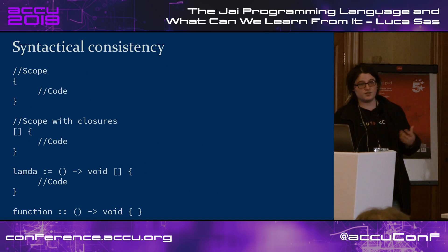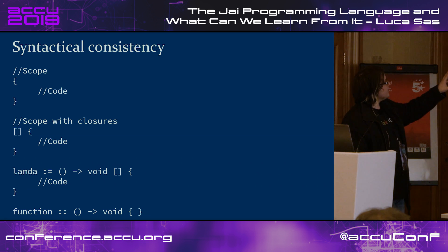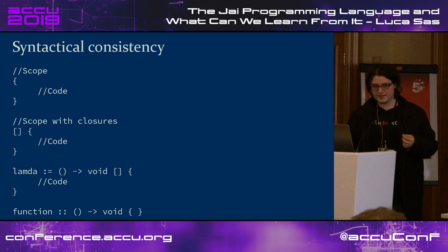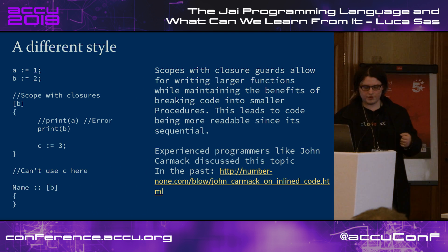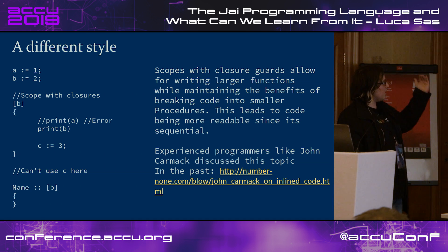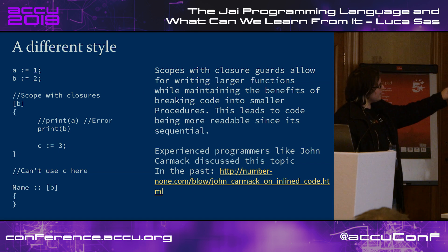Jonathan Blow mentioned in his original talk that syntactical consistency and simplicity were very important. In Jai you can see how the syntax builds from a scope, to a scope with a closure, to a lambda, to a function — he argues these are very easy to refactor because the difference between a lambda and a function is literally one character. The language also allows scopes with closure guards: in a lower scope you can restrict which outer variables are accessible, so a variable A from the upper scope can be blocked while B is allowed.